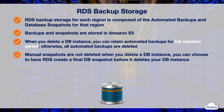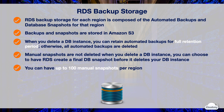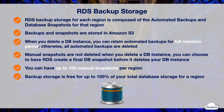Manual snapshots are not deleted when you delete a DB instance. You can choose to have RDS create a final DB snapshot before it deletes your DB instance, which you can use to recover your DB instance — this provides a safeguard against accidental deletions. RDS allows you to have up to 100 manual snapshots per region. Backup storage is free for up to 100% of your total database storage for a region. For example, if you have a DB instance with 500 gibibytes of provisioned database storage, you get 500 gibibytes of backup storage for free.